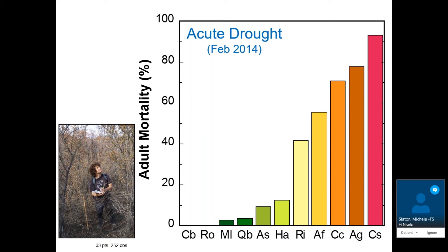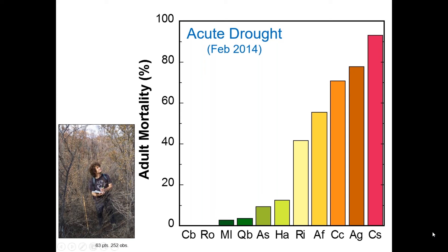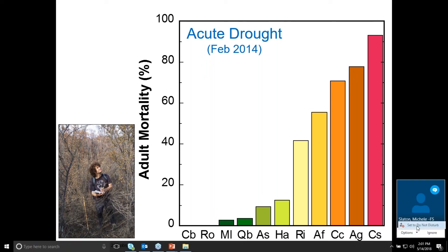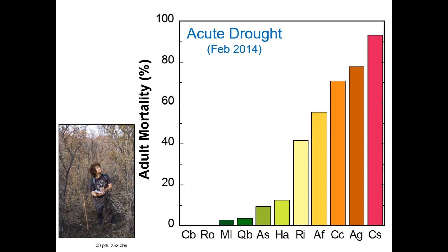Where is Malosma laurina on this figure — on the left with high mortality or the right? Malosma laurina does incredibly well in acute drought. Why? Deep roots trump everything. So at least during acute droughts in California, it seems invincible — never going to die, 100% re-sprout success after fire.